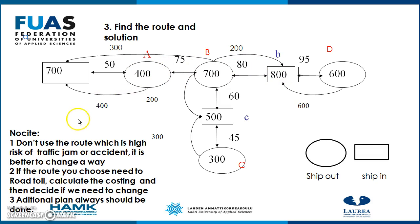The notices for multiple departure are the same as for single departure: do not use roads with high risk of traffic jams or accidents, and if the road you choose requires a toll, calculate the cost and decide whether to change routes. A contingency plan should always be prepared.